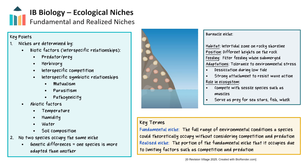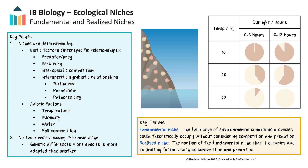Ecologically, they compete with other sessile species like mussels, and serve as prey for predators such as sea stars, fish, and whelks. A species' fundamental niche describes the full range of environmental conditions a species could theoretically occupy without considering competition and predation. A realized niche is the portion of the fundamental niche that it occupies due to limiting factors, such as competition and predation.